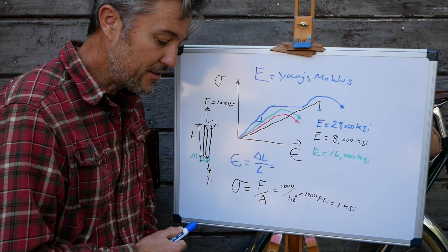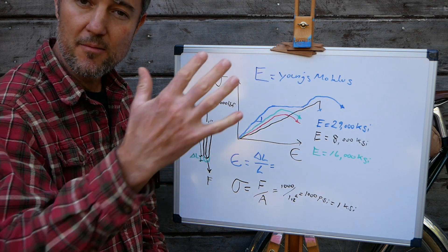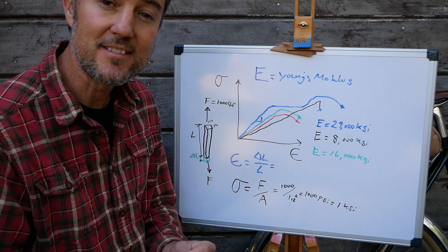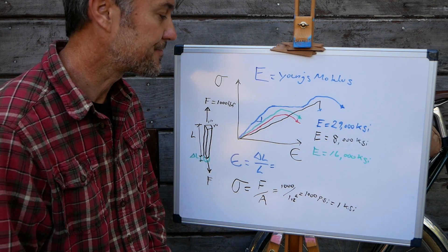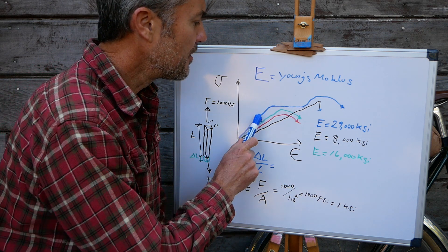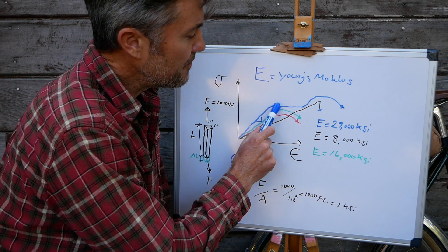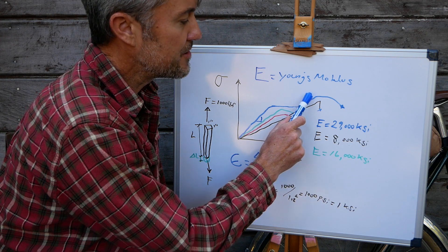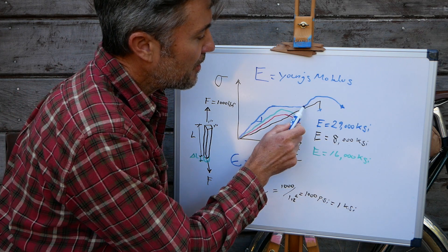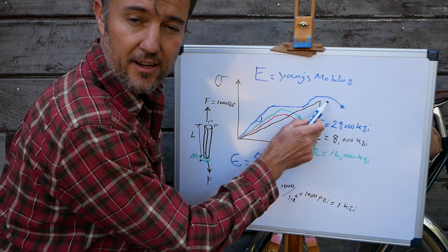So with steel, and this is how we get back to the earlier discussion of why steel is such a unique material, is that steel, when it yields, it yields for a very long time before it goes into the next phase right here where it actually starts to get stronger again.